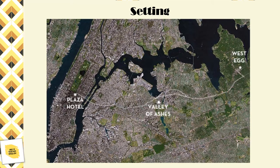The setting moves to the Valley of Ashes, situated between the Eggs and New York City. It's here that we find the lower or working class folk, in stark contrast to the Buchanans, Nick and Jordan.